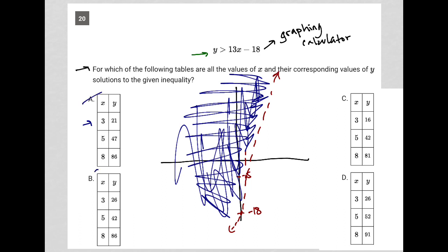You'll see that B also doesn't work because 5, 42 is not within the blue shaded region here. You'll see that choice C also does not work because 3, 16 is not within the shaded region.